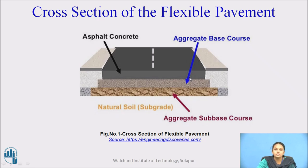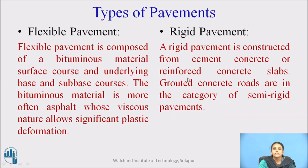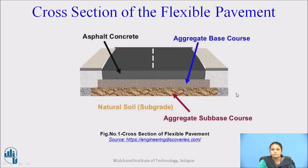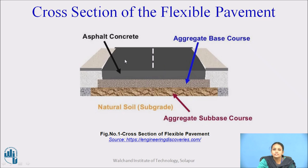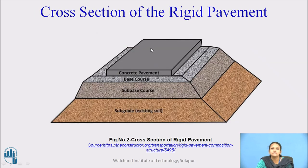Rigid pavement is constructed from cement concrete or reinforced concrete slab. In the cross-section, the lowermost part is the subgrade layer, then the subbase course, the base course, and the topmost surface of the road is made up of concrete. So in flexible pavement the surface is made of asphalt or bituminous material, whereas in rigid pavement the surface is made of concrete.